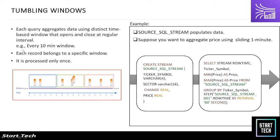In a tumbling window, each query is aggregated using a distinct time-based window that opens and closes at a specific interval. As shown in the diagram, there are no overlaps — for example a window opens at T1 and closes every 5 seconds at T5 or every 10 minutes, with no overlap between windows.